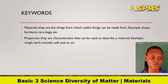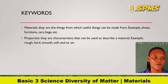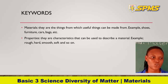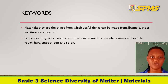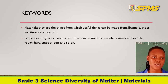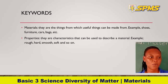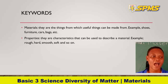Our second key word is properties. They are the characteristics that can be used to describe a material — same as the features, something that differentiates one thing from another. For example: rough, hard, smooth, soft.